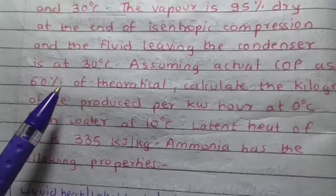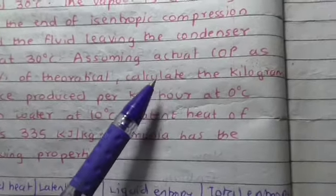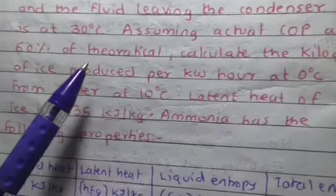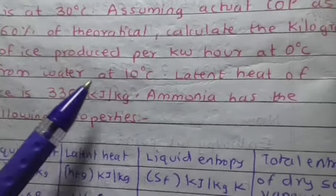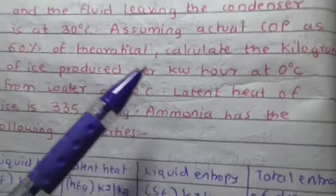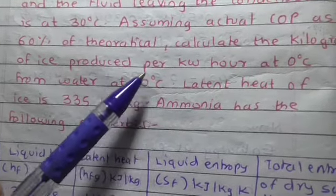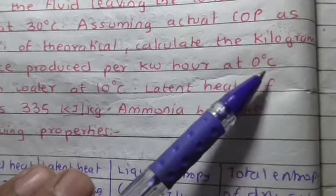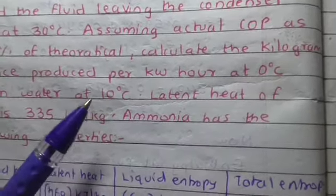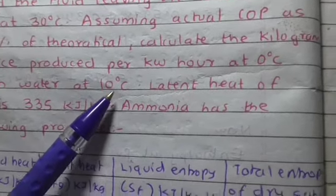What we have to find is how many kilograms of ice is produced per kilowatt hour at zero degrees Celsius from water at 10 degrees Celsius. Water is given at 10 degrees Celsius and we have to form ice at 0 degrees Celsius, so delta T will be 10.